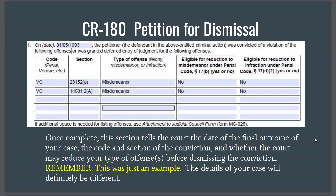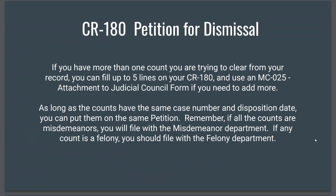Once complete, this section tells the court the date of the final outcome of your case, the code and section of your conviction, and whether the court may reduce your type of offense before dismissing. Be sure to fill in only the details from your own case — this is just an example. The CR 180 has space for up to five counts. If you have convictions for more than five counts from a single case, you can use a standard attachment form from the Judicial Council. Remember: if all counts are misdemeanors, file in the misdemeanor department; if any count is a felony, it goes to the felony department.